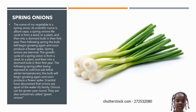Scientists have discovered that onions are part of the allium family. Onions can also be grown year round. They are also sometimes called green onions.